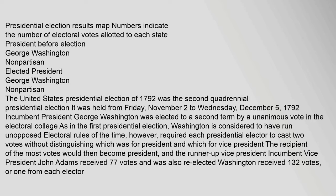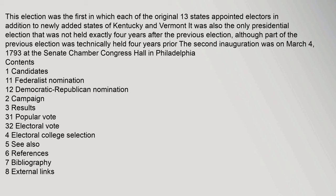This election was the first in which each of the original 13 states appointed electors, in addition to the newly added states of Kentucky and Vermont. It was also the only presidential election that was not held exactly four years after the previous election, although part of the previous election was technically held four years prior. The second inauguration was on March 4, 1793, at the Senate Chamber, Congress Hall, in Philadelphia.